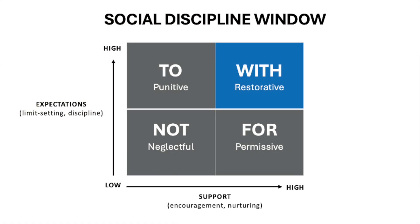This is what we call our social discipline window. It shows us what it means to be restorative using two factors: expectations and support. We want to hold high expectations and high support. Not everyone is going to be meeting our expectations out of the gate. Do we hold fast to them and let the ones who aren't reaching it fall behind, or do we meet them where they're at and provide the support they need? If a seventh grade student comes in reading at a fourth grade level, we wouldn't just say figure it out — we'd meet them where they were and provide the support needed.